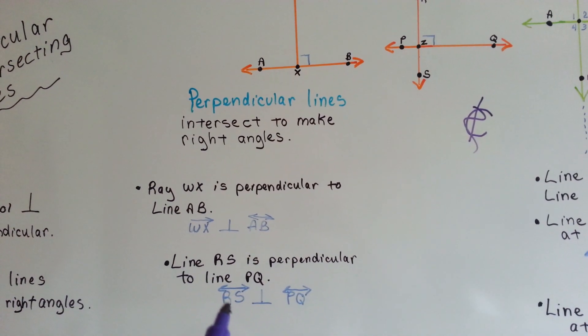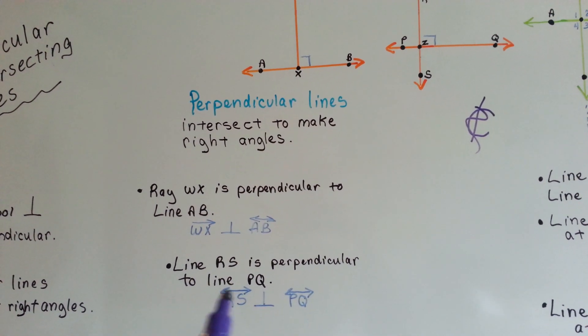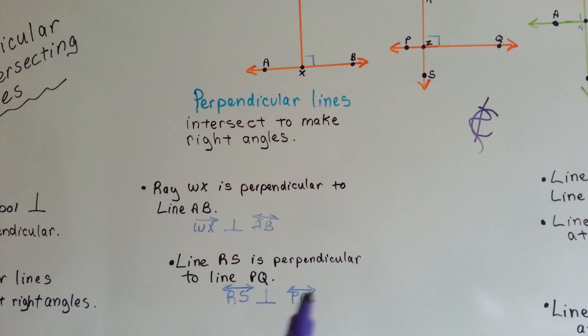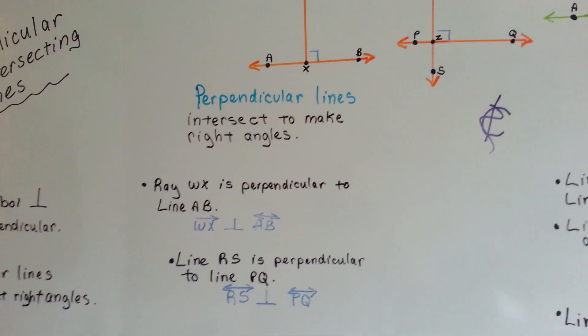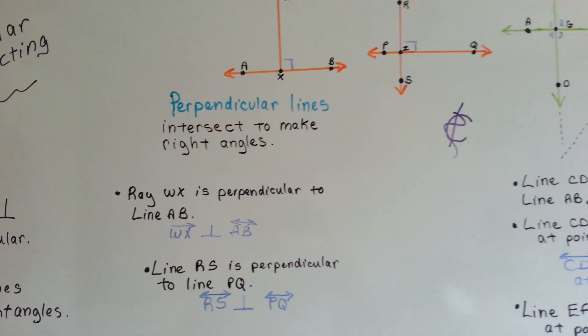it would be like this, RS with the double-arrowed line, with a perpendicular sign, with PQ with the double-arrowed line. See? Line RS is perpendicular to PQ.